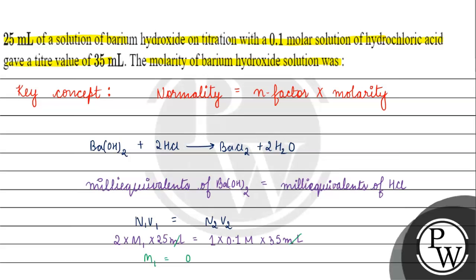So we get 0.1 times 35 divided by 2 times 25, which gives us 3.5 divided by 50, and when we solve we get 0.07 molar.